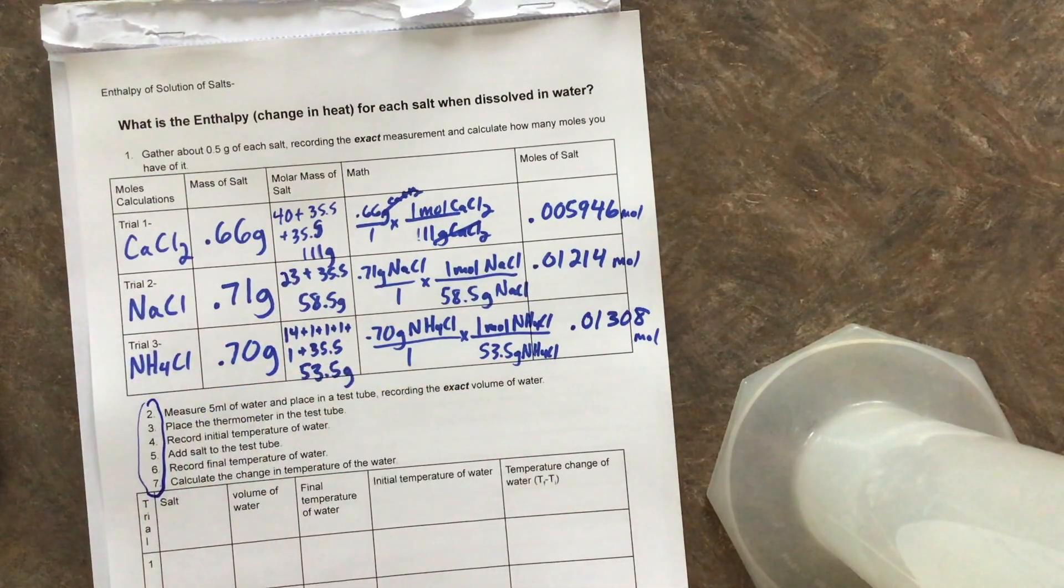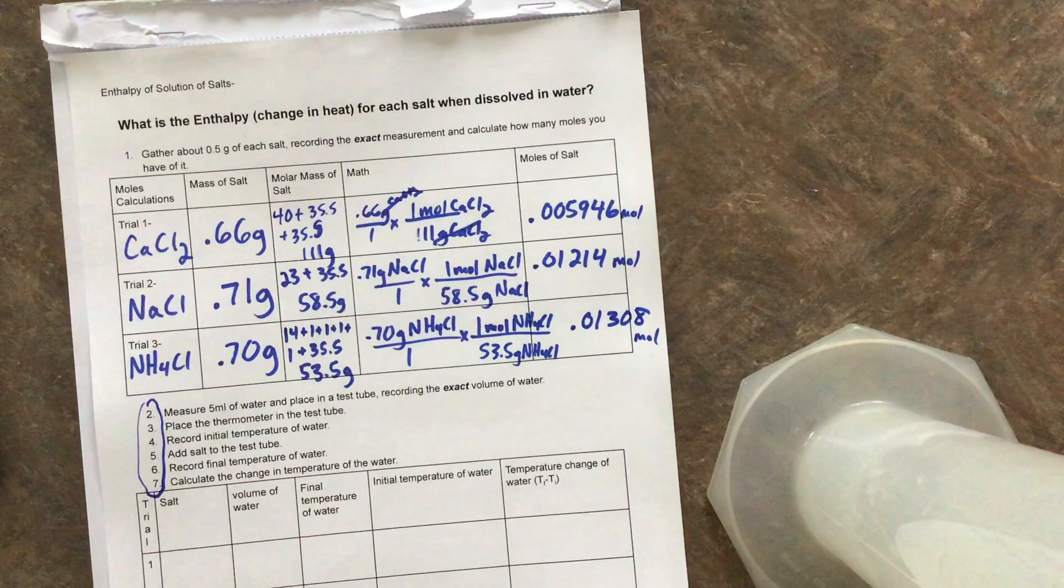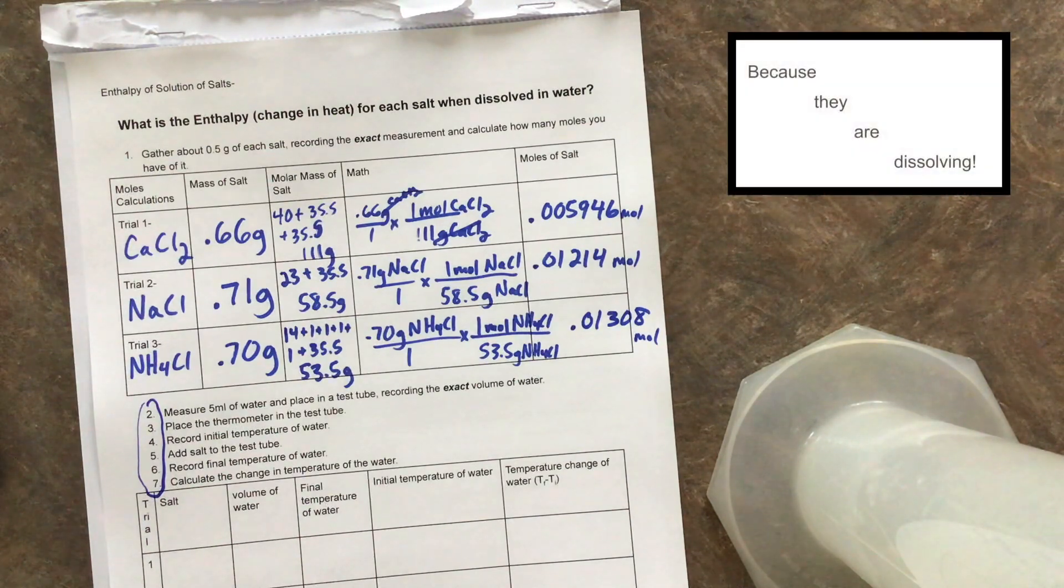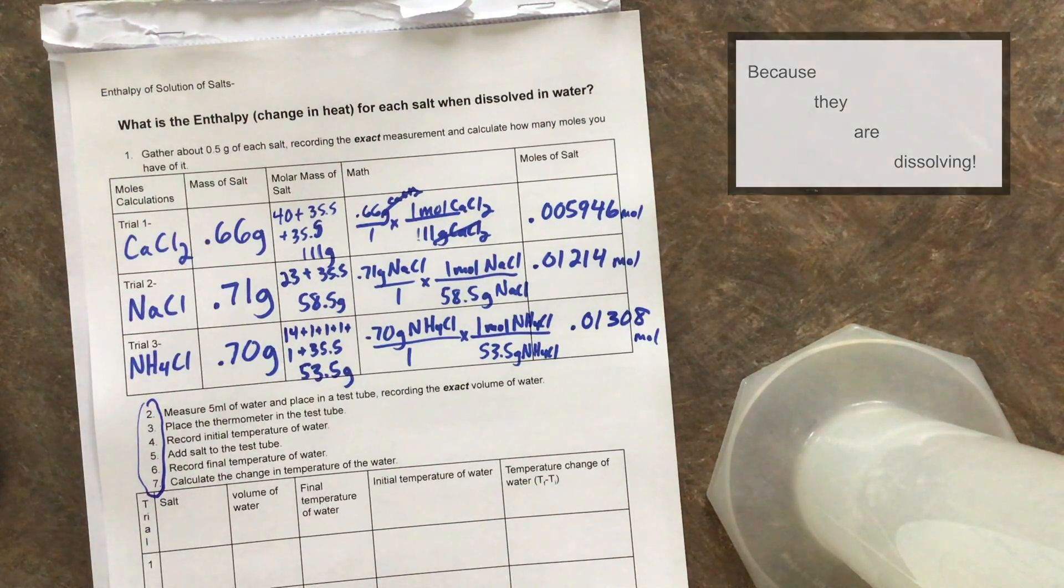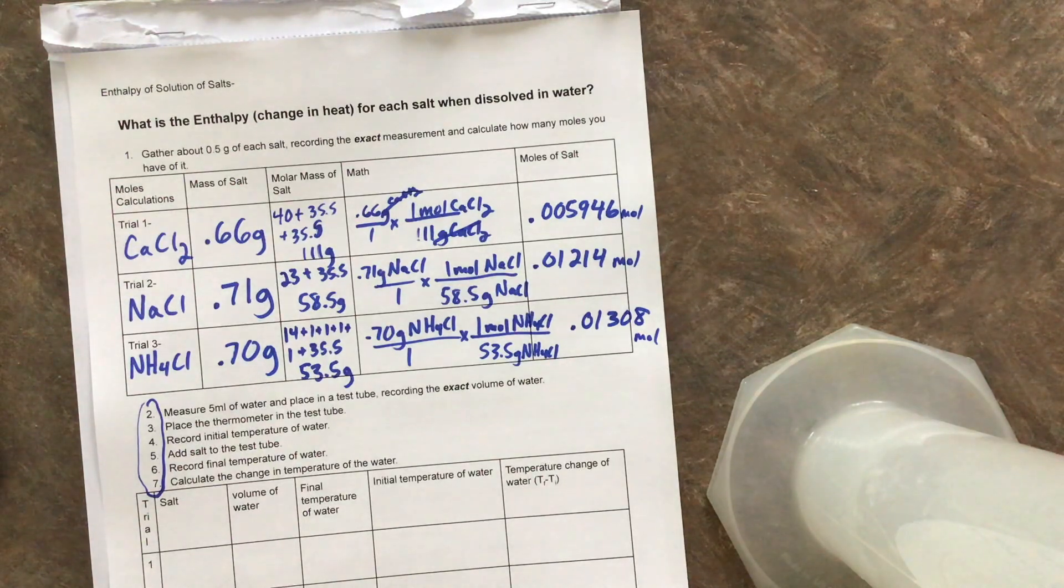We are going to take these salts and dump them into about five milliliters of water. When we do that, the temperature is probably going to go up, go down, or stay the same. And that's the thing, you're like, I didn't even know water changed temperatures when you put salt into it. And it does, it sometimes changes temperature, that's what we're trying to figure out. So let's go on to step two, three, and four.